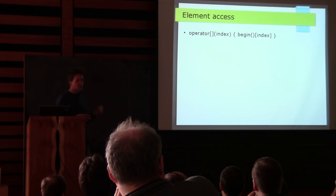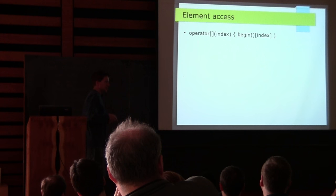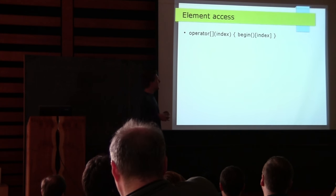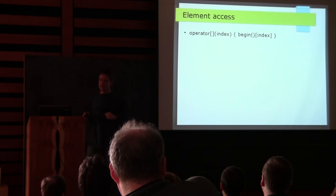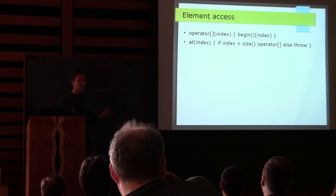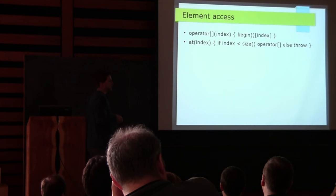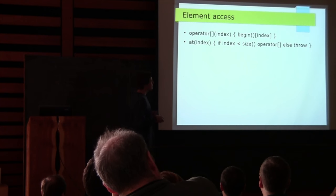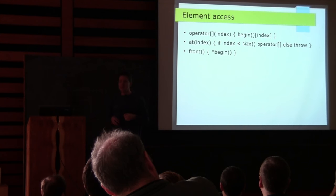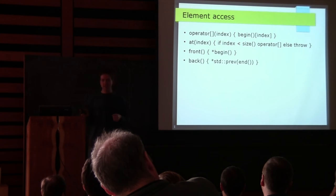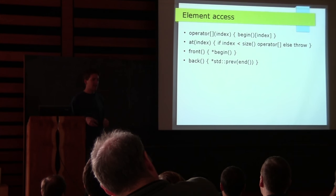For element access, we have the bracket operator. Vector has random access iterators, and random access iterators are defined to have their own bracket operator, so we can defer entirely to member function begin — it returns an iterator, and we index into that. The 'at' function just checks that the index you pass in is less than the size, and if it is, calls the bracket operator; otherwise it throws an exception. Front is the element at begin, and back is the element at one before one-past-the-end.